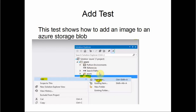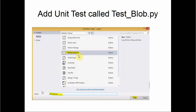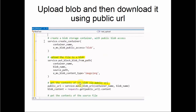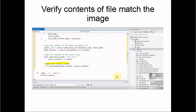We're going to test adding an image — loading it up to the cloud and then retrieving it. We add a new item that will be a unit test and call it 'test_blob.py,' then click Add. The code initializes the blob container as the first step, then uploads the file to a blob. After uploading to the cloud, we get the contents of the blob via a public URL to see if the original image matches what we got back, and we do an assert to test that the content matches.